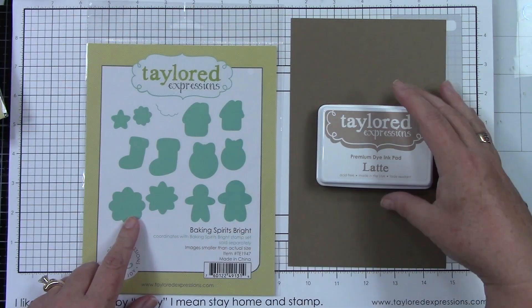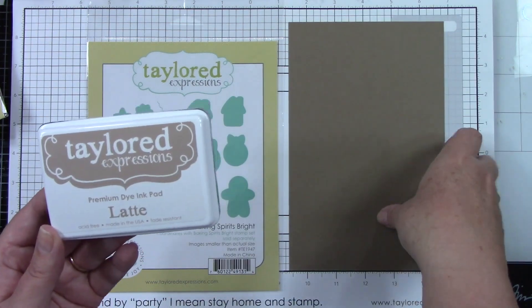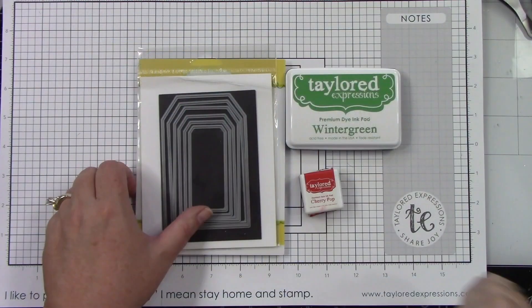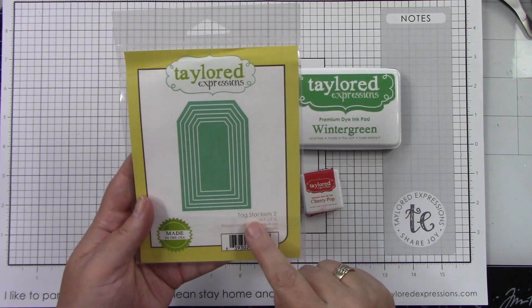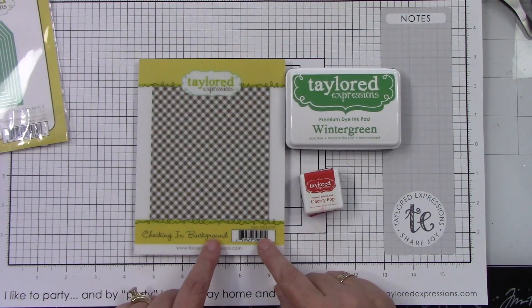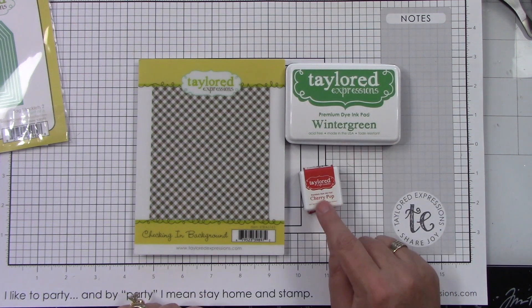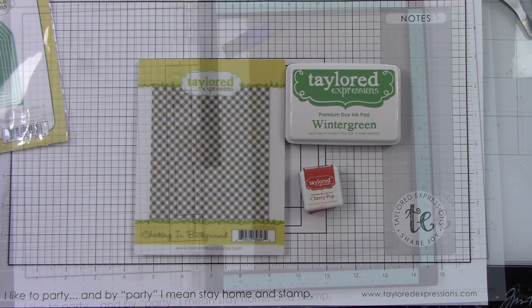I'll be using the new Latte ink and cardstock, along with the Tag Stacklets 2 dies and the Checking In background stencil. I'm also using the brand new Winter Green ink and Cherry Pop ink, along with some Sugar Cube cardstock.